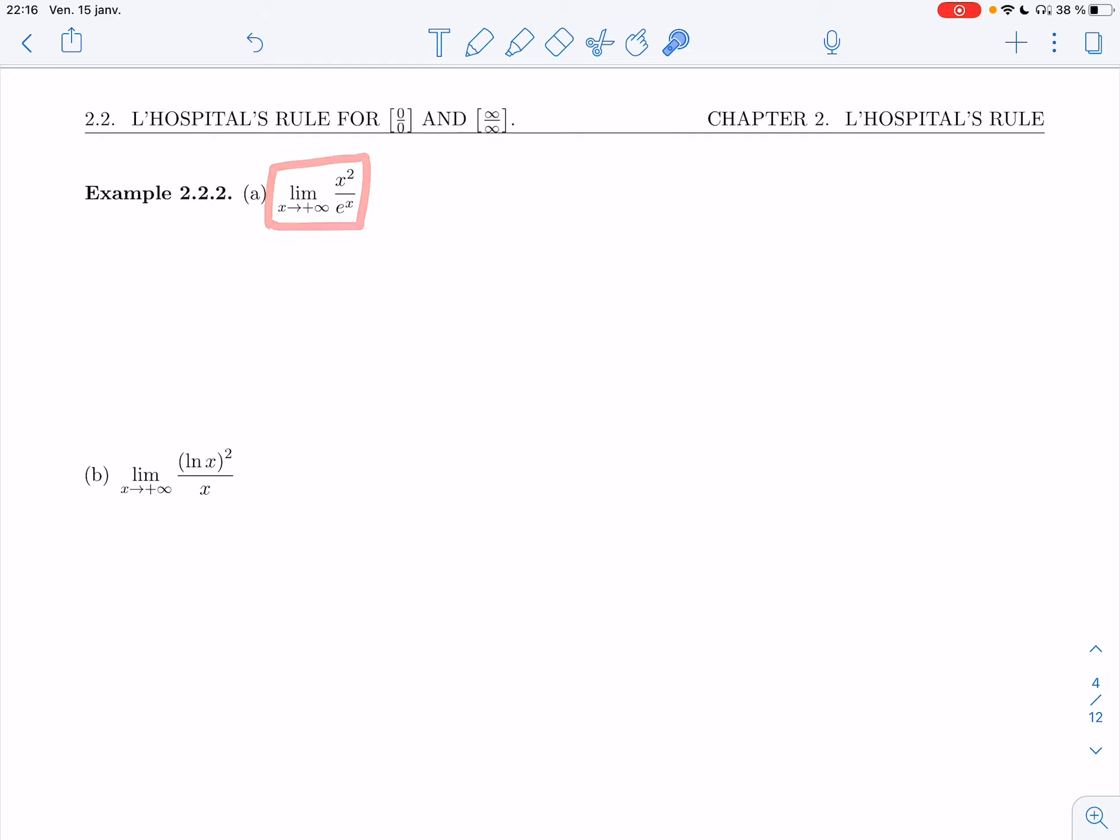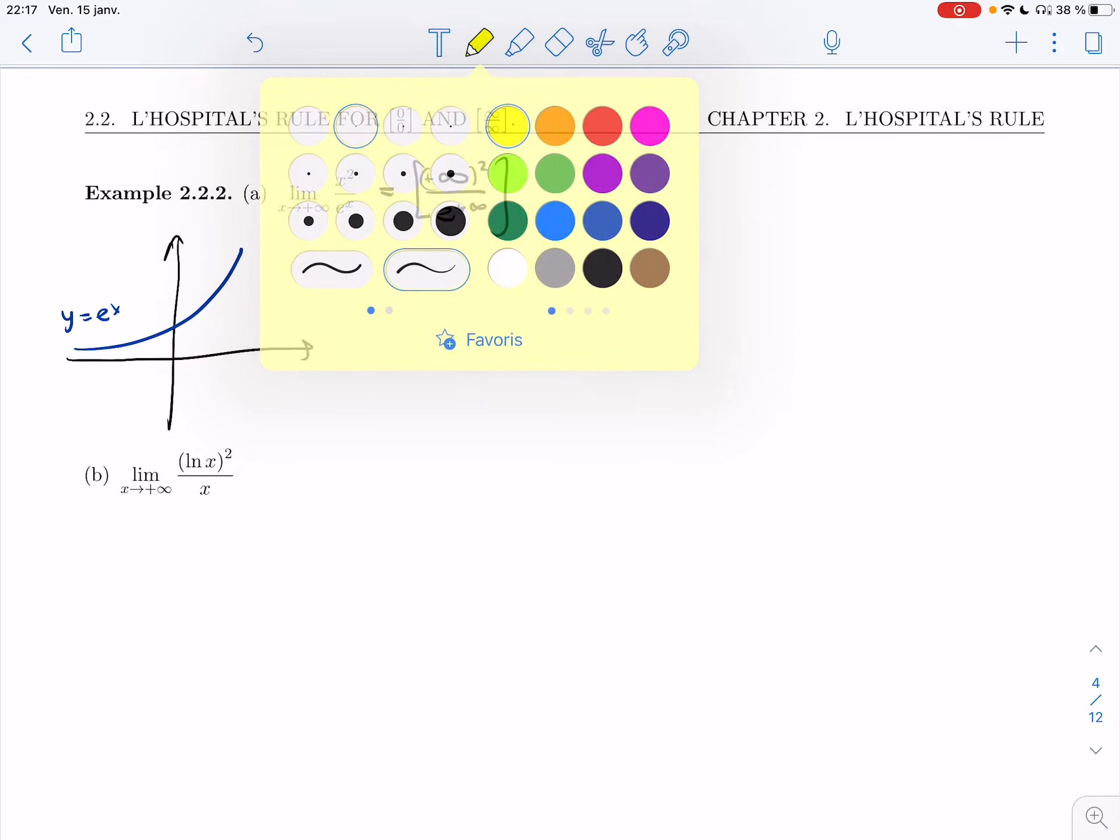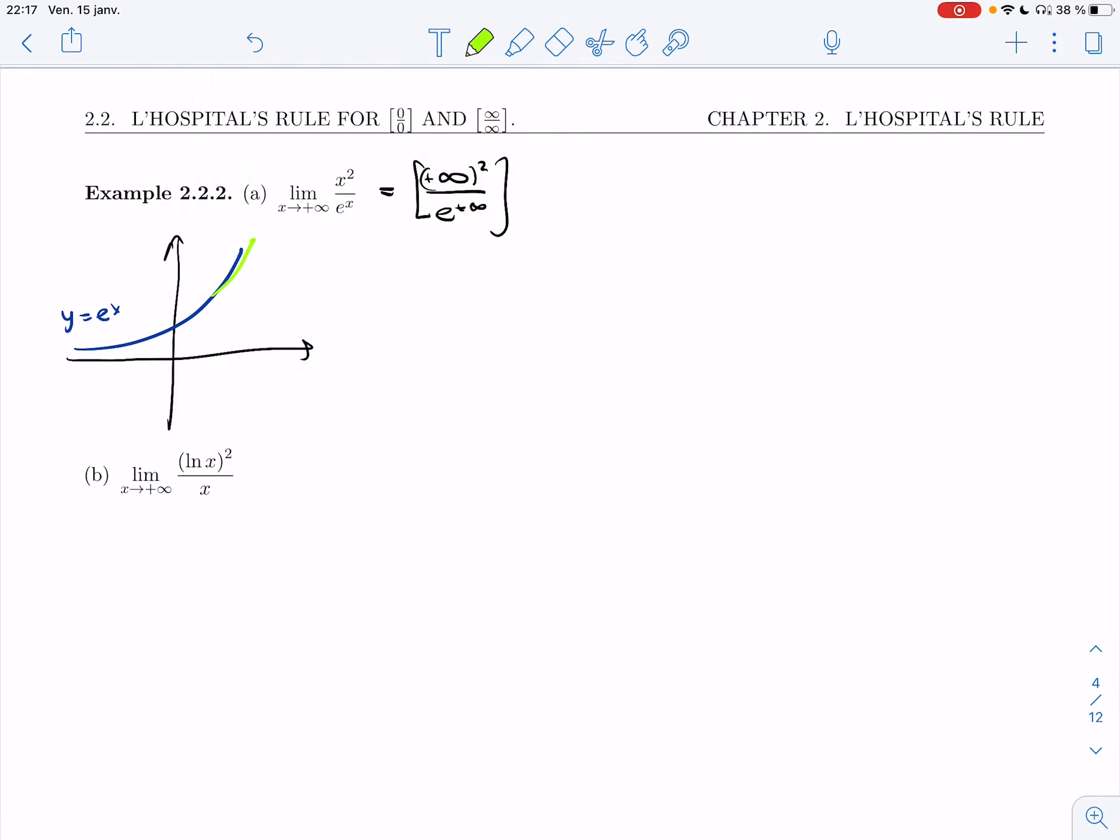Limit as x goes to infinity of x squared over e to the x. If I plug in, I get plus infinity squared over e to the plus infinity. For those of you who don't remember, let's graph e to the plus infinity. So y equals e to the x. I want to go to infinity. That's this way. And so I'm going straight up very fast. All right, so that's infinity over infinity. All right, infinity over infinity, one of the two cases where I can apply L'Hôpital's rule.